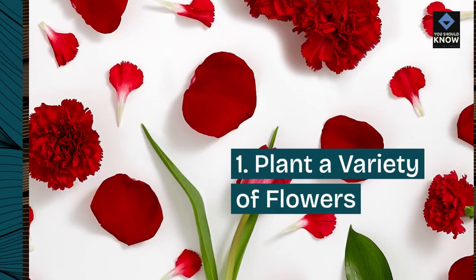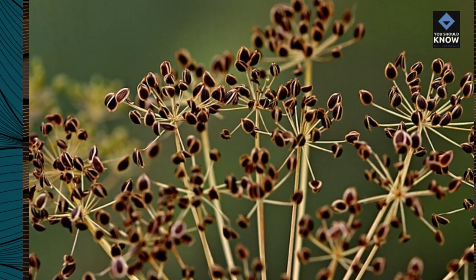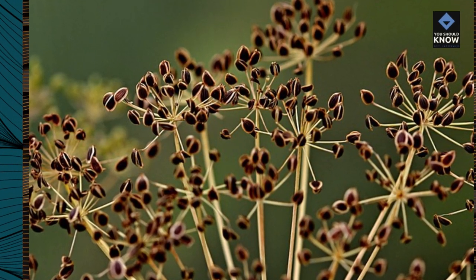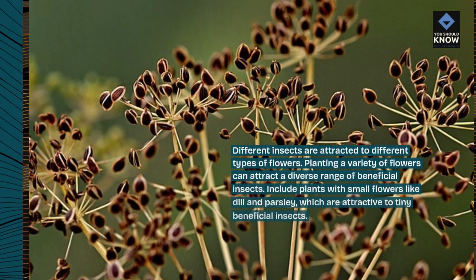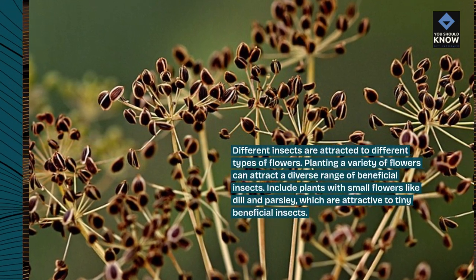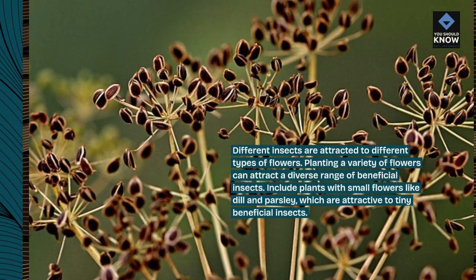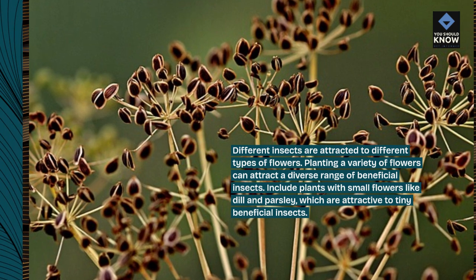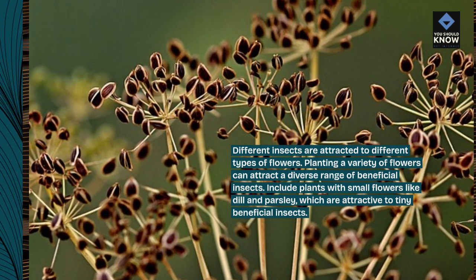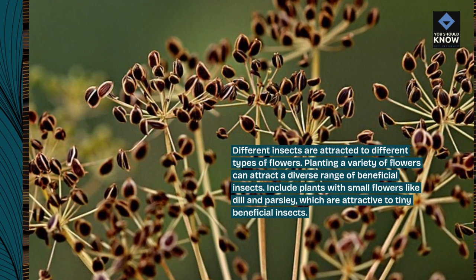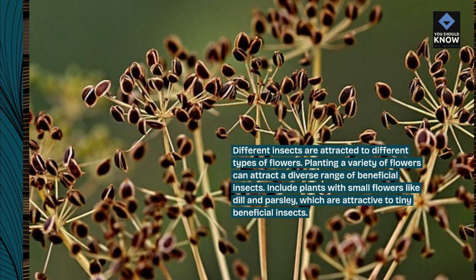Tip 1: Plant a variety of flowers. Different insects are attracted to different types of flowers. Planting a variety of flowers can attract a diverse range of beneficial insects. Include plants with small flowers like dill and parsley, which are attractive to tiny beneficial insects.